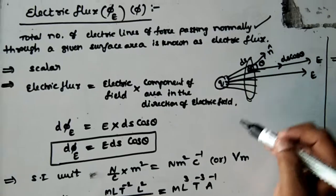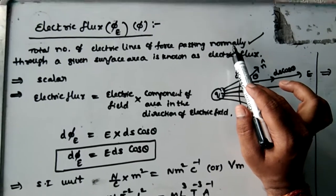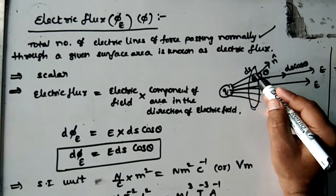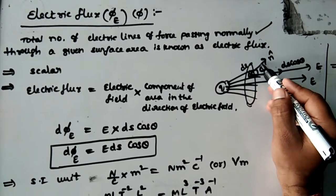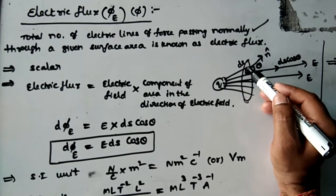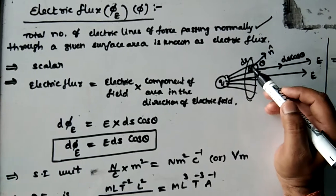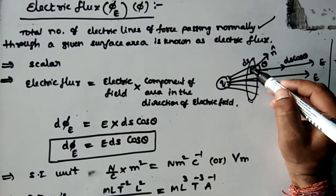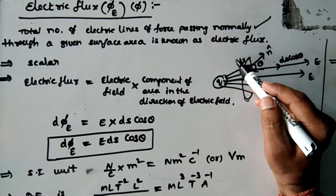If the surface is kept at an angle, how can we say lines of force are moving perpendicularly to it? Consider a small area element ds. To this ds, draw a normal perpendicular line called n cap. n cap is the unit vector normal to the small surface. This n cap gives the direction of the surface area. Remember — a small surface area is a vector, and n cap indicates the direction of that surface area.